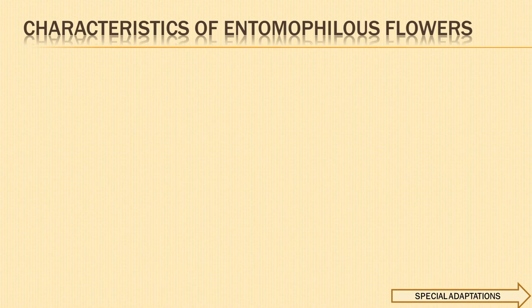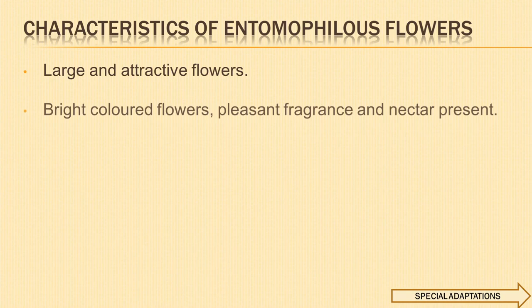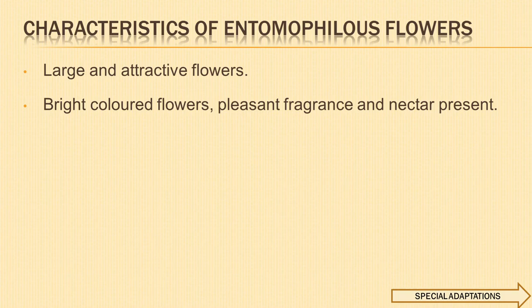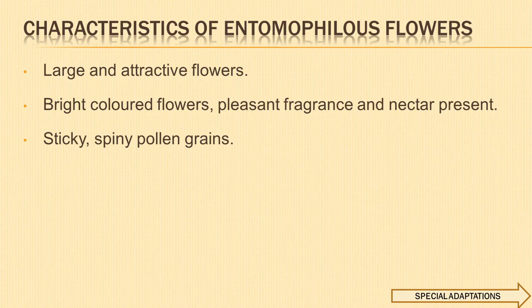Next, we move on to entomophily. Pollination through the agency of insects is called entomophily and the plants are called entomophilous. The characteristics of such flowers are: they are generally large and attractive, with bright color, pleasant fragrance, and nectar. Flowers attract insects by their color, nectar, or scent. The pollen grains have sticky, spiny, or rough exine. Stigma is sticky so that it can receive the pollen grains. This condition is found in jasmine and rose flowers.